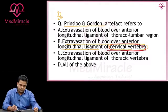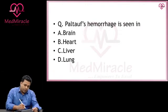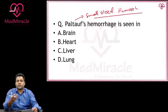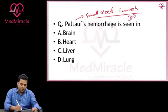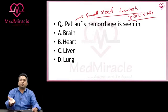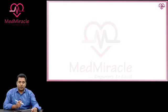Next question: Pultoff's hemorrhages are small-sized hemorrhages seen in drowning deaths. In drowning, the most commonly affected organ is the lungs, so obviously these hemorrhages will be seen over the lungs. Simple question — done.